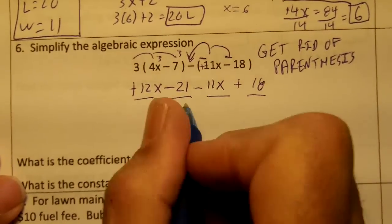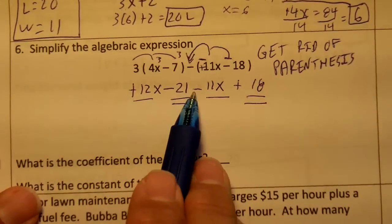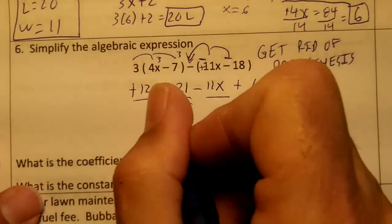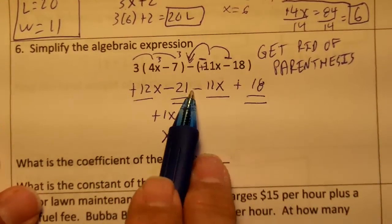Now we single underline the x's and double underline our constants. 12x minus 11x would be a positive 1x or just x. Negative 21 plus 18.